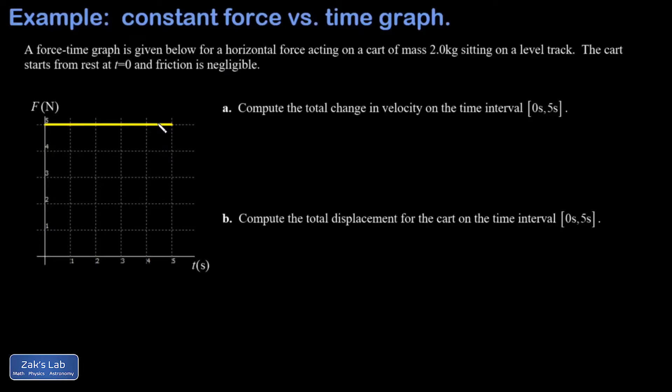In this video we're given a force-time graph, and it's actually the simplest possible graph - just a constant force of five newtons. We're told this force is acting on a cart of mass two kilograms sitting on a level track. The cart starts from rest at t equals zero and we can ignore friction.